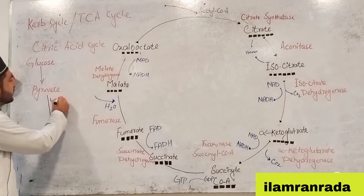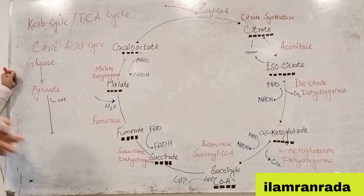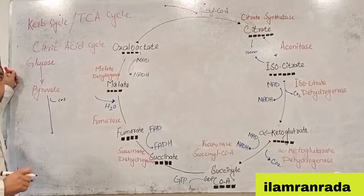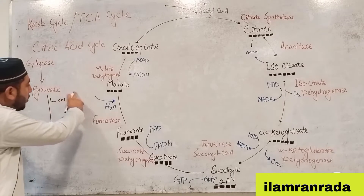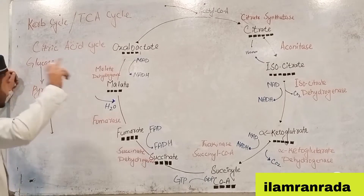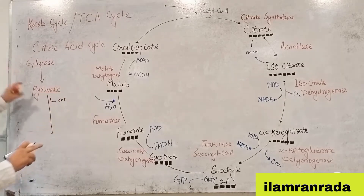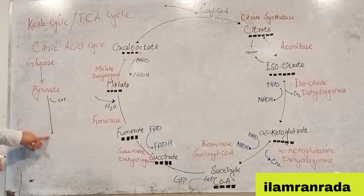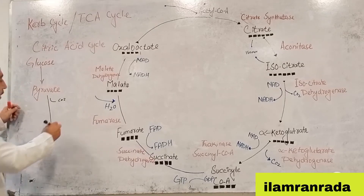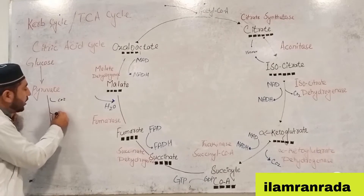In the link reaction and Krebs cycle, carbon dioxide is removed. Then oxygen and hydrogen are also removed as part of the cycle's oxidation steps.